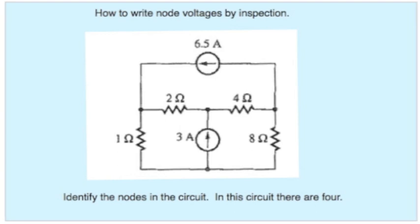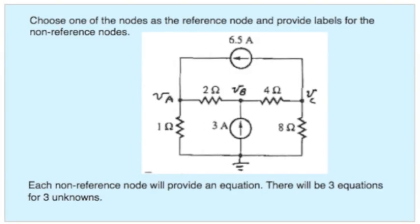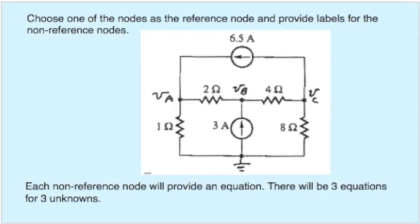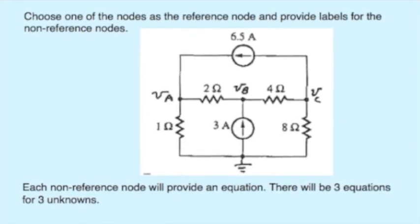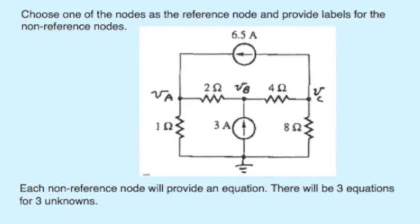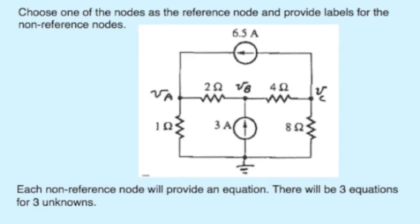We see that it's a four-node circuit, so we're going to want to pick a reference node and we're going to want to label the other nodes. Here one of the four nodes has been selected as a reference node. It's denoted now with a ground symbol. The other three nodes have been labeled A, B, and C. We wish to obtain three independent equations that can be solved for the node voltages V sub A, V sub B, and V sub C.